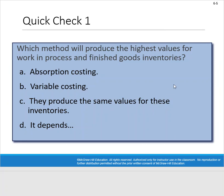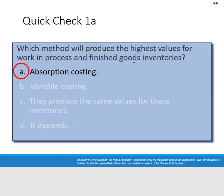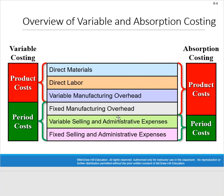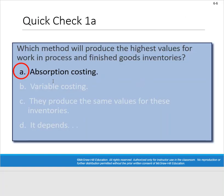Quick check: which method produces the highest values for work-in-process and finished goods inventories? Absorption costing — because fixed manufacturing overhead is rolled up into our inventories to the extent that we don't sell them. That's how we come up with the higher inventory values under absorption costing.